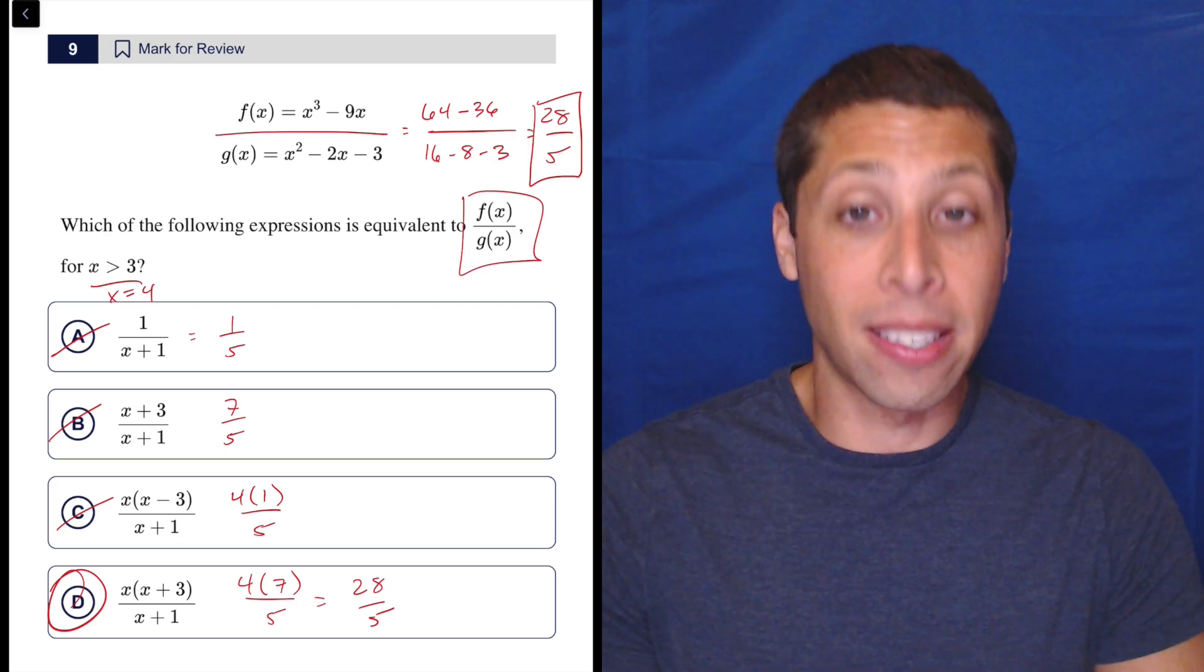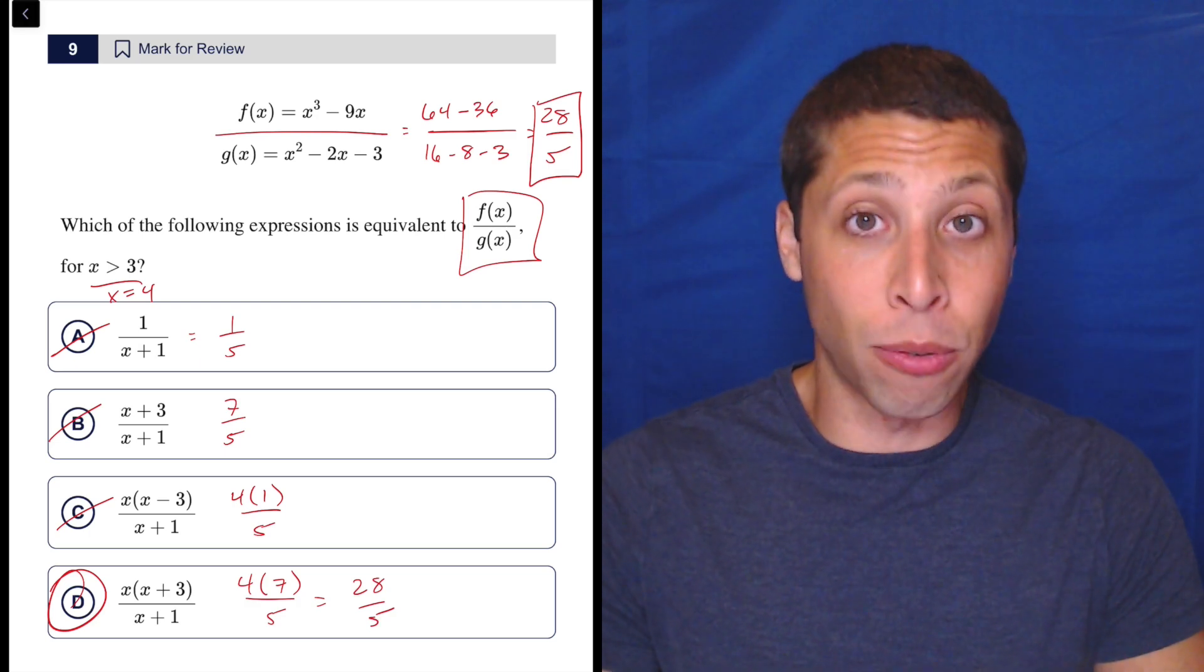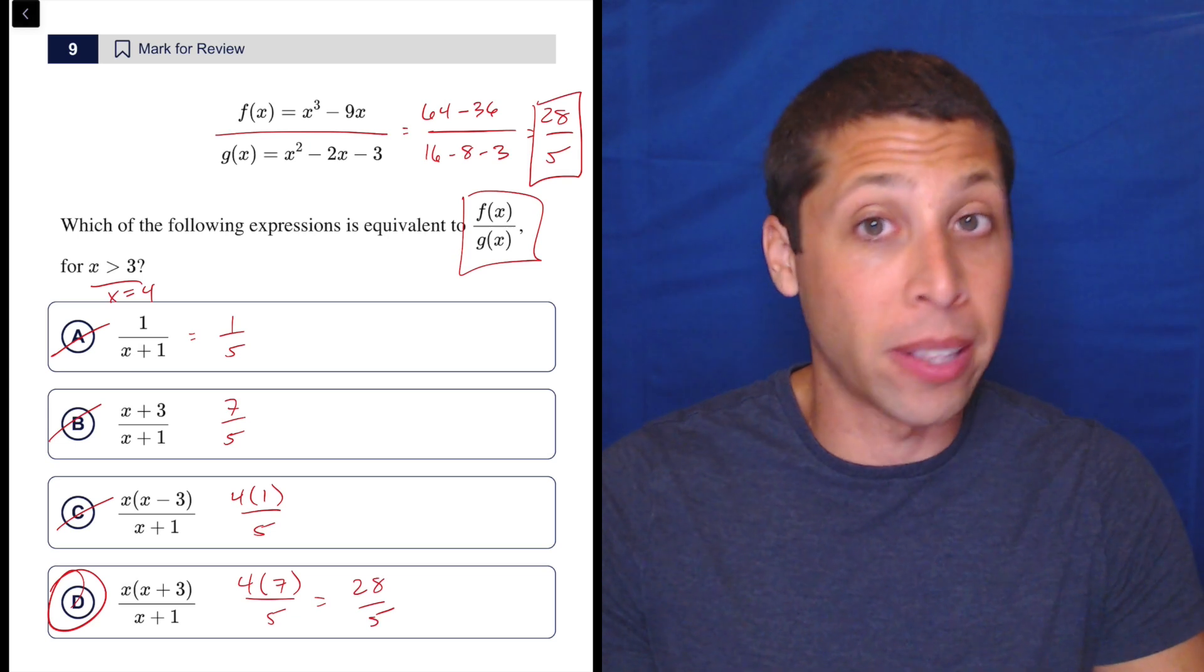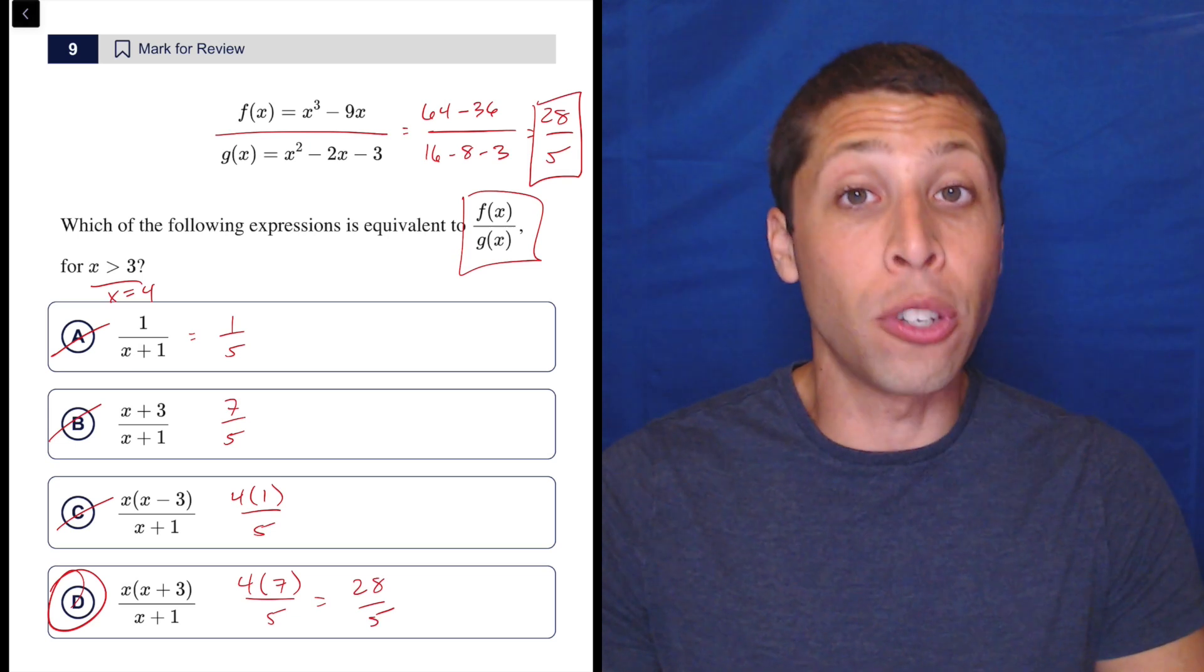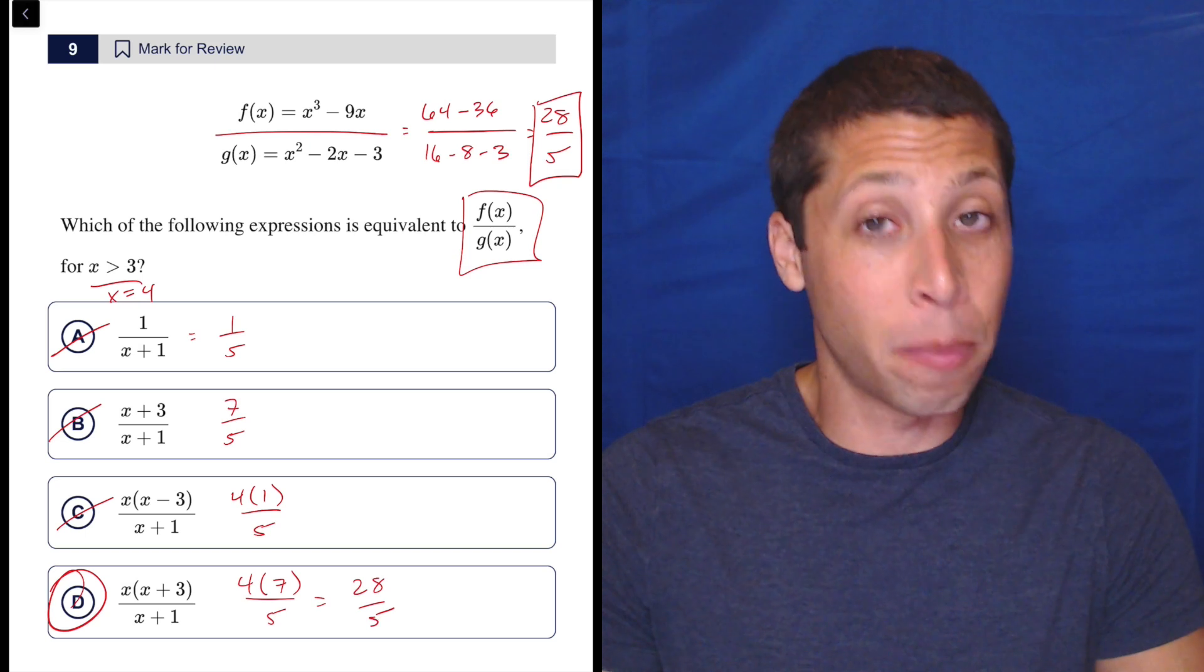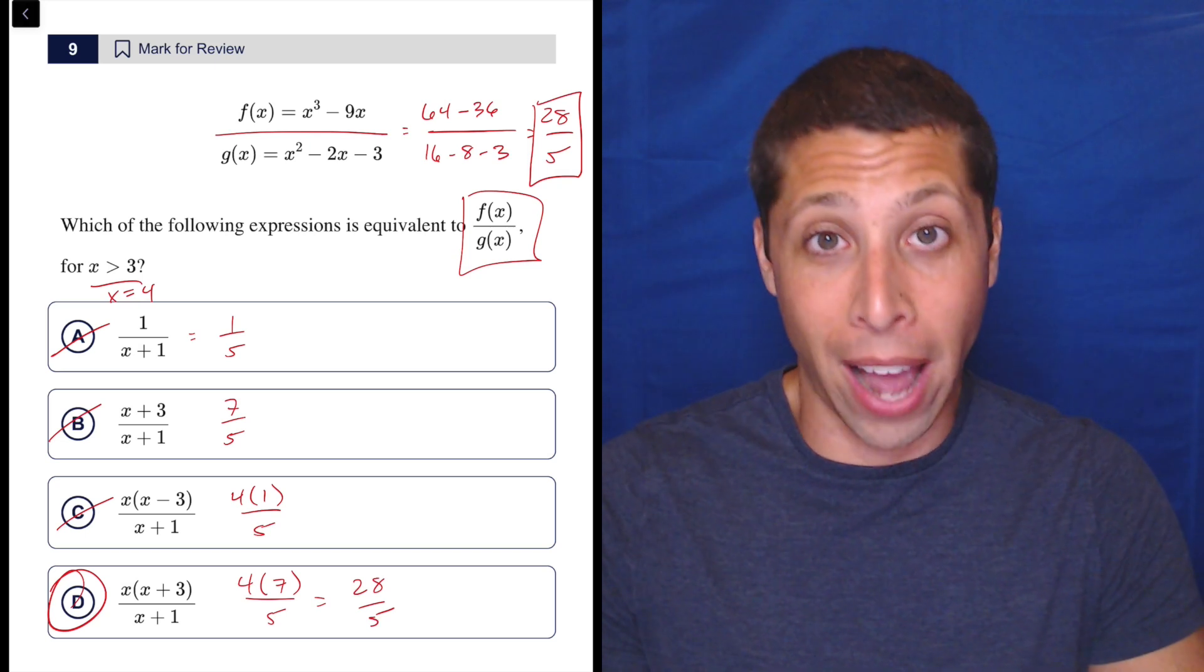This is another question that the SAT considers very, very hard, but that you must get right. There is no way to get a 700 or better on the SAT if you're getting something like this wrong, or if you're using too much time to get something like this right. So this is a big example of a question that can completely shift your score if you're willing to shift your strategy.